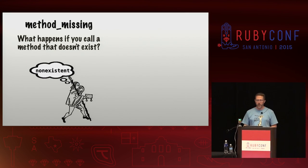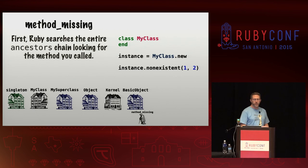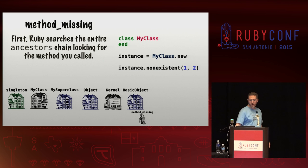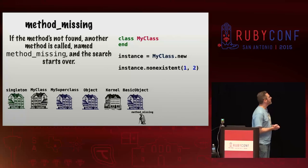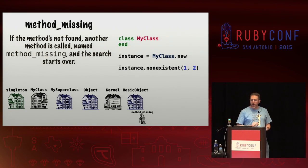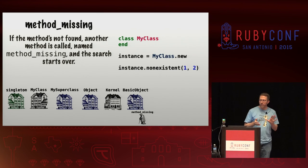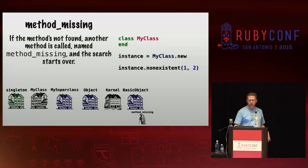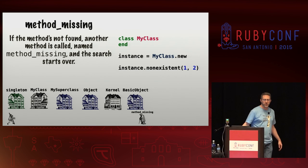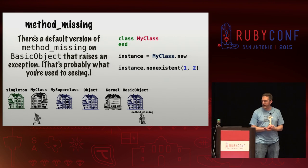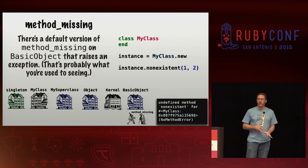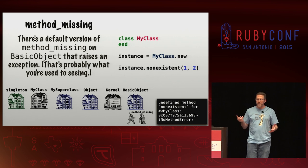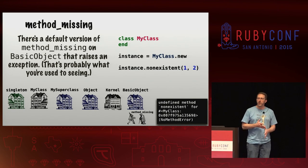Now, what would happen if you were to call a method that doesn't exist? First Ruby will search the entire ancestors chain looking for the method you called. If we call a method named non-existent and pass it the arguments one and two, Ruby will proceed through the entire method lookup chain. When it doesn't find it, it'll call another method named method_missing, and the search will start over on the singleton class. There's a default version of method_missing on the BasicObject class, which all Ruby classes inherit from. That raises the exception you're probably used to seeing: NoMethodError.